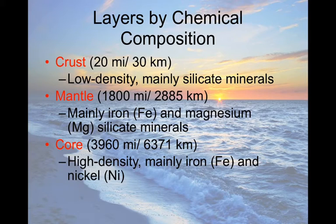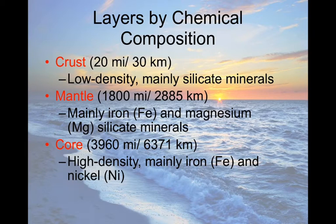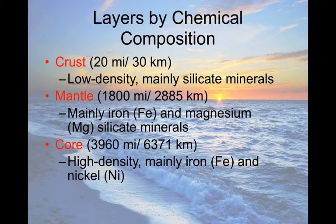By chemical composition, the crust is approximately 20 miles (30 kilometers) deep. It's low density and mostly silicate — silica is the most common element in Earth's crust, making up sand, granite, basalt, and similar materials. Silica is very lightweight. The mantle extends from about 30 kilometers down to almost 3,000 kilometers. It still contains silica, but mixed with heavier metals — iron and magnesium. Specifically, magnesium silicate makes up a large portion of the mantle and gives it its particular density, which we can measure using waves.